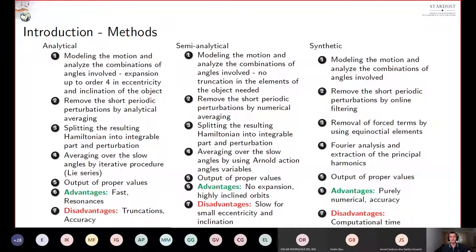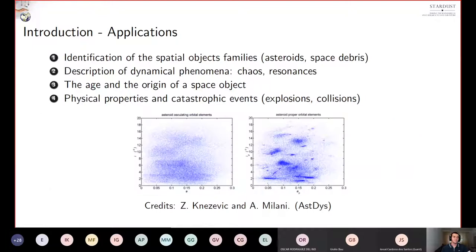Each of these methods has its own advantages and disadvantages, and the choosing of the method depends on the context of the problem. For example, if it wanted to analyze the dynamical structure of a resonant region, the analytic method is recommended, but for high inclined orbits, the semi-analytic theory is better choice. In the end, if one needs a very high accuracy for the computation, the most powerful method for this task is the synthetic theory.